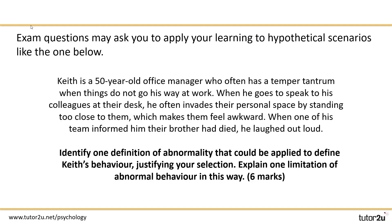Let's begin by taking a look at this question on the screen. Keith is a 50-year-old office manager who often has a temper tantrum when things don't go his way at work. When he goes to speak to his colleagues at their desk he often invades their personal space by standing too close to them, which makes them feel awkward. When one of his team informed him their brother had died, he laughed out loud. The question underneath: identify one definition of abnormality that could be applied to define Keith's behavior, justify your selection, and explain one limitation of defining abnormal behavior in this way. That question is worth six marks.